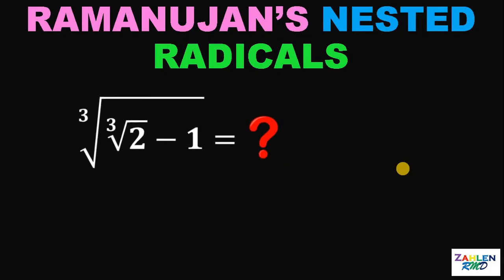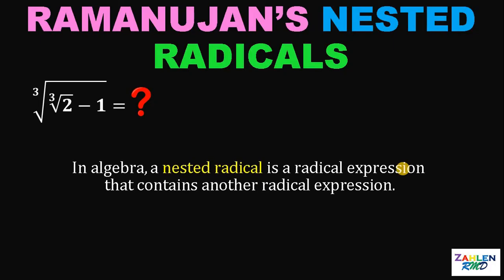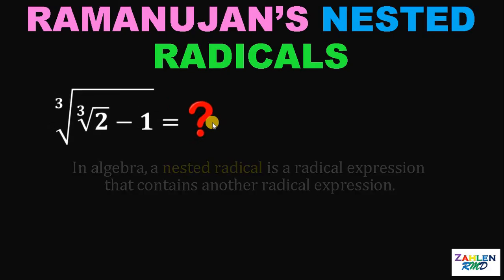The question is: what is a nested radical? In algebra, a nested radical is a radical expression that contains another radical expression, like cube root of cube root of 2 minus 1. Our goal in this question is to denest this radical expression. Some nested radicals can be rewritten in a form that is not nested, and rewriting a nested radical in this way is called denesting. This is not always possible, and even when possible, it is often difficult.